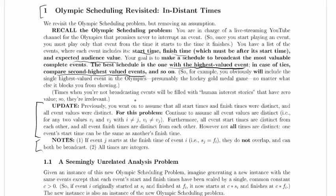Times when you're not broadcasting events will be filled with human interest stories that have zero values, so they're irrelevant. It says they're irrelevant, but that actually does settle one question, like what if you had one schedule, schedule one, and it's got a value seven, three, and two event, and schedule two has just a value seven and three event, which one's better? Well we can imagine that they have zeros filled in all the way at the bottom because they've got all these human interest stories, and so clearly schedule one is the better of those two.